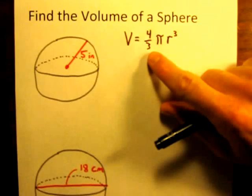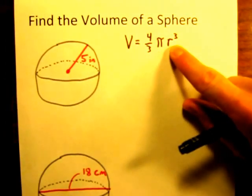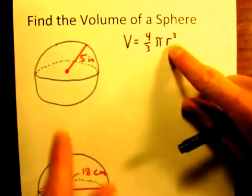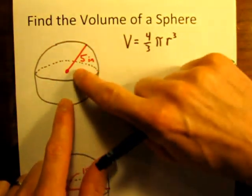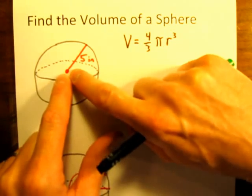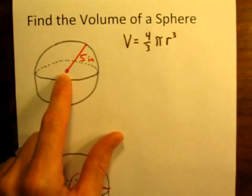So the only thing you need to figure out is what is the radius of this sphere before you can calculate the volume. And in a problem like this one right here, it's easy. It's given to us. The radius is simply the distance from the center of the sphere out to the edge, and here it's given to us as 5 inches.